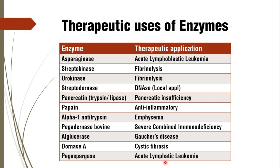There are two MCQs here and you should not get confused: lymphoblastic uses asparaginase, lymphatic uses pegaspargase. For skin disorders, we use DNase, that is streptodornase, as a local application. For pancreatic insufficiency and indigestion, we use a combination of trypsin and lipase, that is pancreatin. As an anti-inflammatory drug in enzyme form, papain is used. For emphysema, alpha-1 antitrypsin is given, since it is deficient in emphysema, to control the disease.